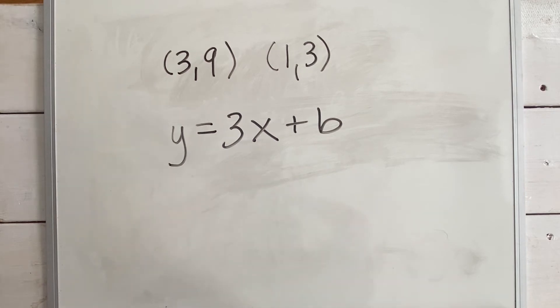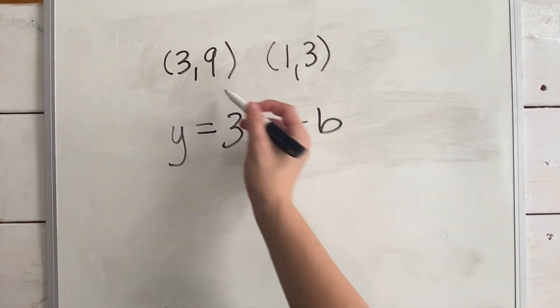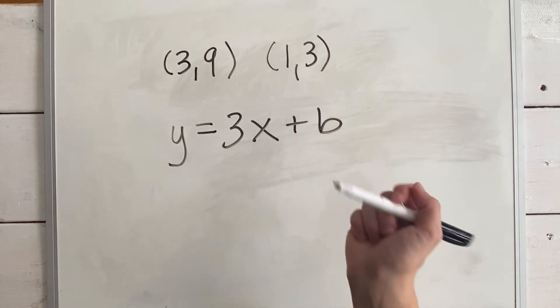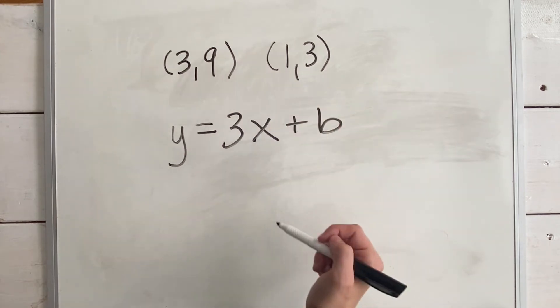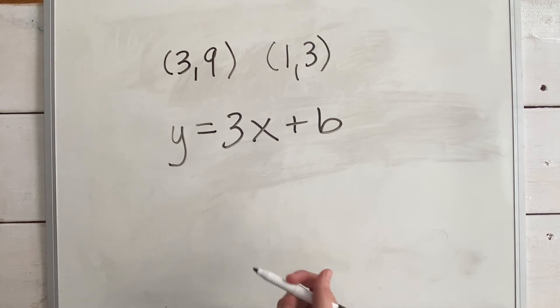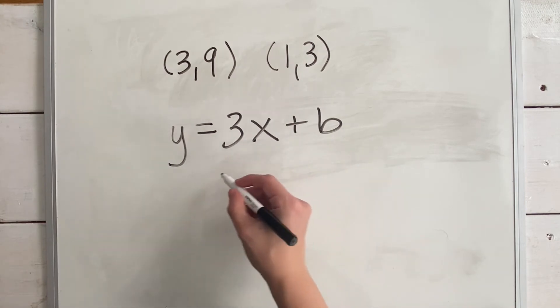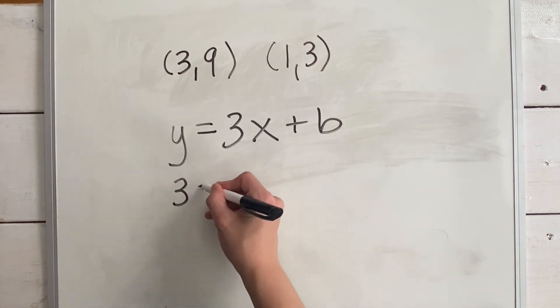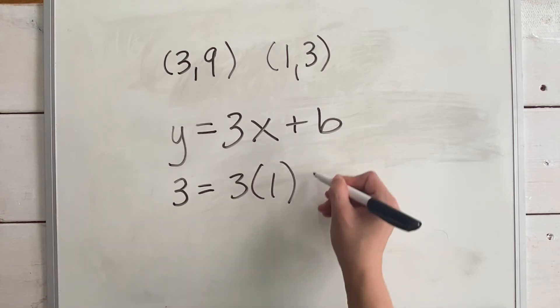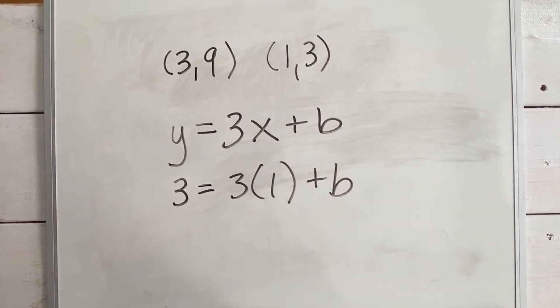To find our y-intercept b, we can use one or the other point because we know both of these points are on the line. Plug them in for x and y and solve for b. I'm going to use the point (1,3). So I plug in three for y equals three times one for x plus b. And now I have a simple equation with one variable and I can easily solve for b. b plus three equals three. So b equals zero.